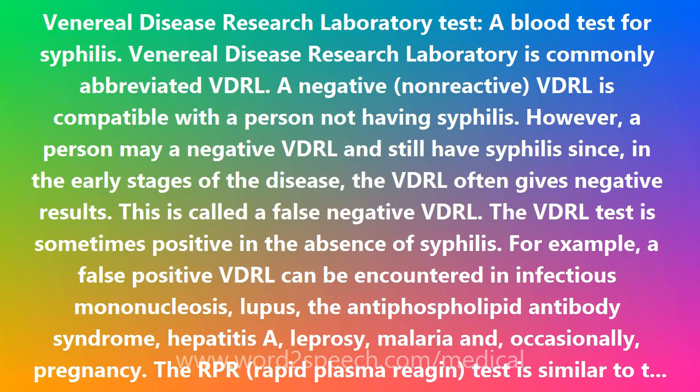A negative VDRL is compatible with a person not having syphilis. However, a person may have a negative VDRL and still have syphilis, since in the early stages of the disease the VDRL often gives negative results. This is called a false negative VDRL.